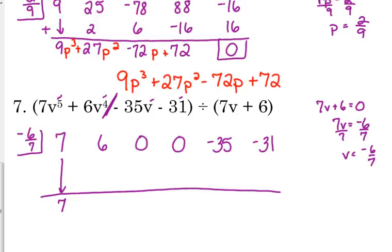All right. Bring down that first coefficient of 7. Multiply. Guess what? The 7's cancel, so that gives us negative 6. Add 6 plus negative 6 is 0. Well, that's nice because 0 times anything is 0. When we add, we get 0. When we multiply, we get 0. And when we add, we get 0 again. And one more time when we multiply, we're going to get 0. But this time when we add, it's not 0 anymore. It's negative 35. When we multiply those, that's going to give us positive 30. Again, you can do it in your calculator. I'm just doing it in my head. And when we add, we get negative 1 for the remainder.